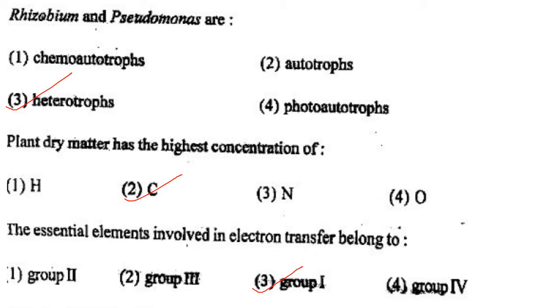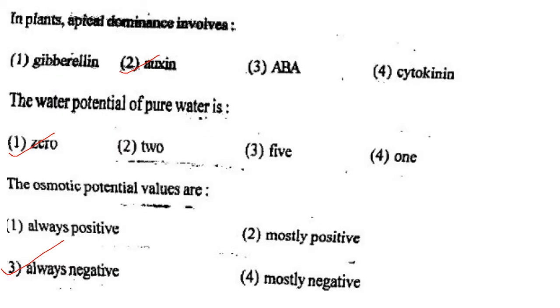Next one: The essential elements involved in electron transfer belong to option 1, group 1; option 2, group 2; option 3, group 3; option 4, group 4. Answer is option 3: group 1.